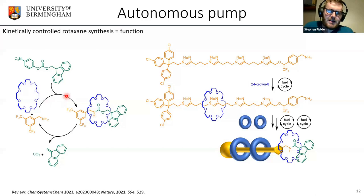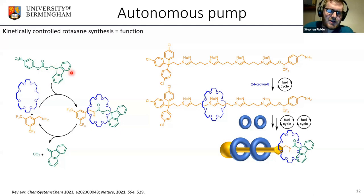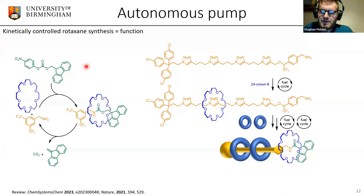We were also able to make an autonomous pump — rather than adding chemical reagents one after another, we mix everything together and it autonomously undergoes several cycles of operation. Taking an amine and crown ether macrocycle in the presence of an activated FMOC-type reagent generates a rotaxane intermediate, but this is unstable. Under basic conditions over time, it regenerates the amine and produces waste as well as the crown ether, allowing multiple pump operations. I believe Shantanu spoke to you about this in detail.